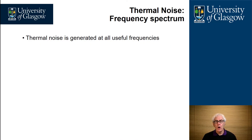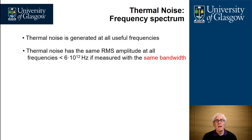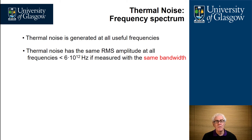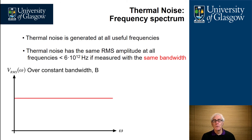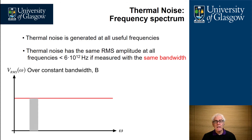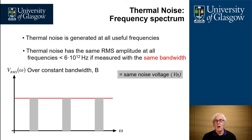Thermal noise is generated at all useful frequencies that we consider in electronics. It has the same RMS amplitude at all frequencies less than about 6 terahertz, as long as you measure it within the same bandwidth. This is what it looks like if you plot the root mean square of noise over a constant bandwidth from zero up to about 6 terahertz — for any given bandwidth, you always get the same noise voltage irrespective of frequency.